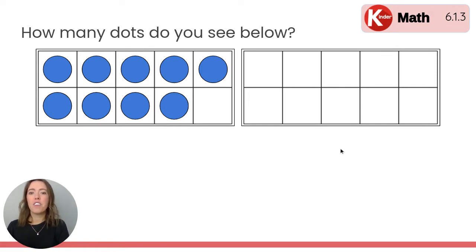First, let's look over here at the first ten frame because it's the only one with dots. I noticed that the whole top row is filled up. Do you remember how much that is at the top of a ten frame?